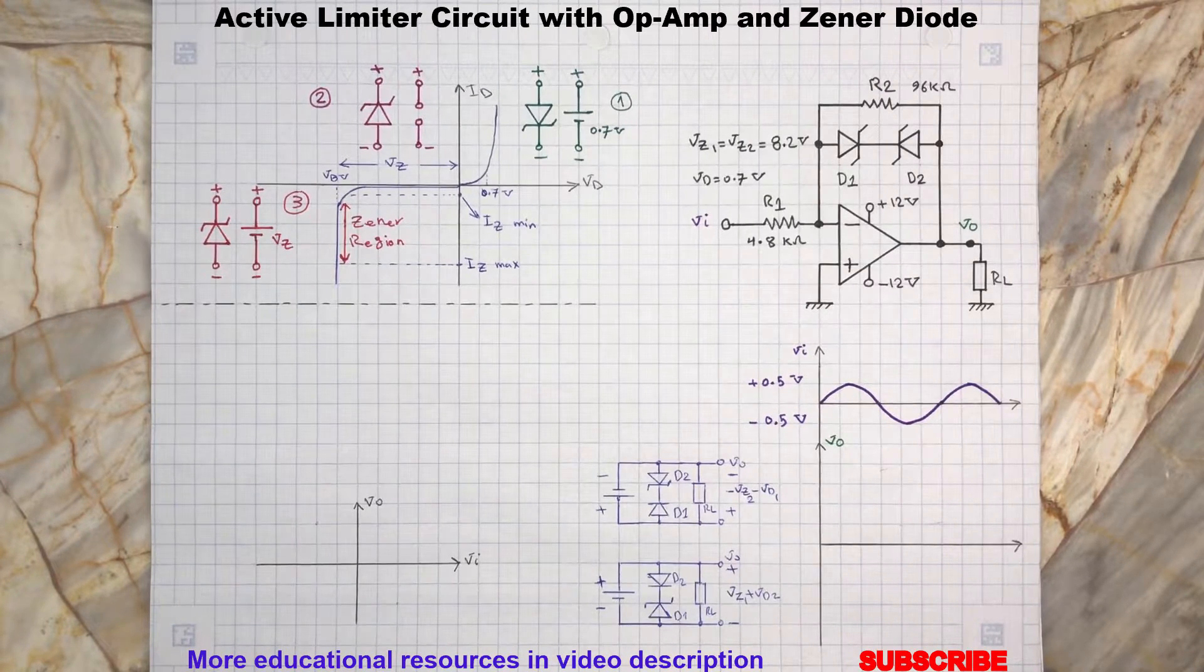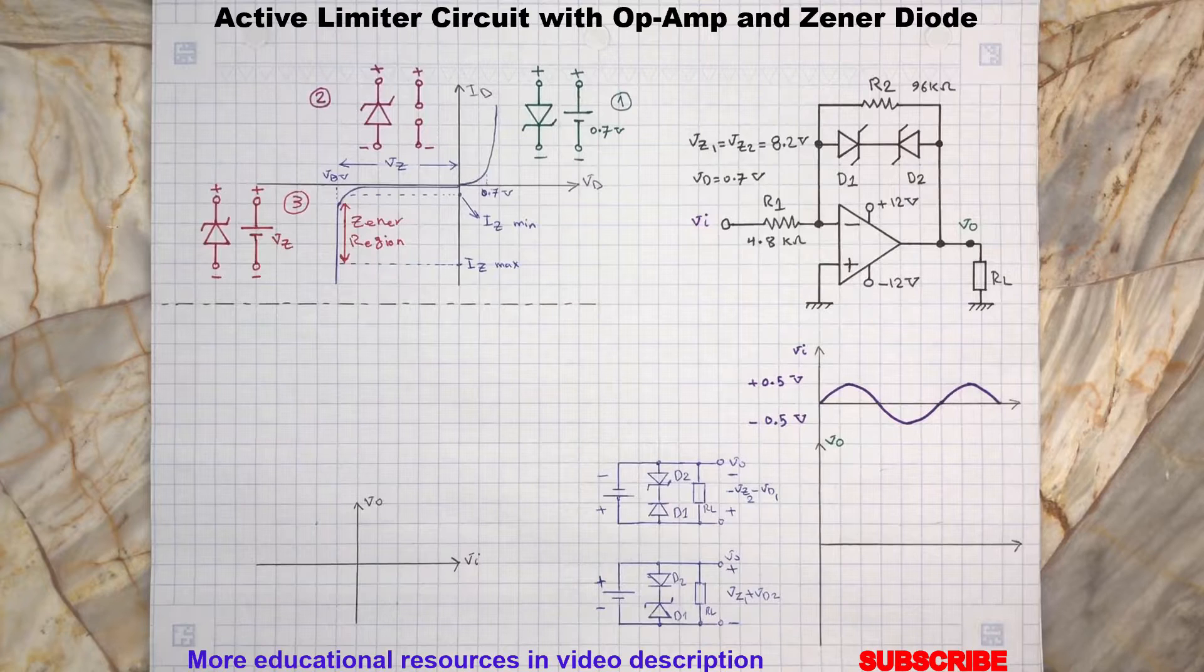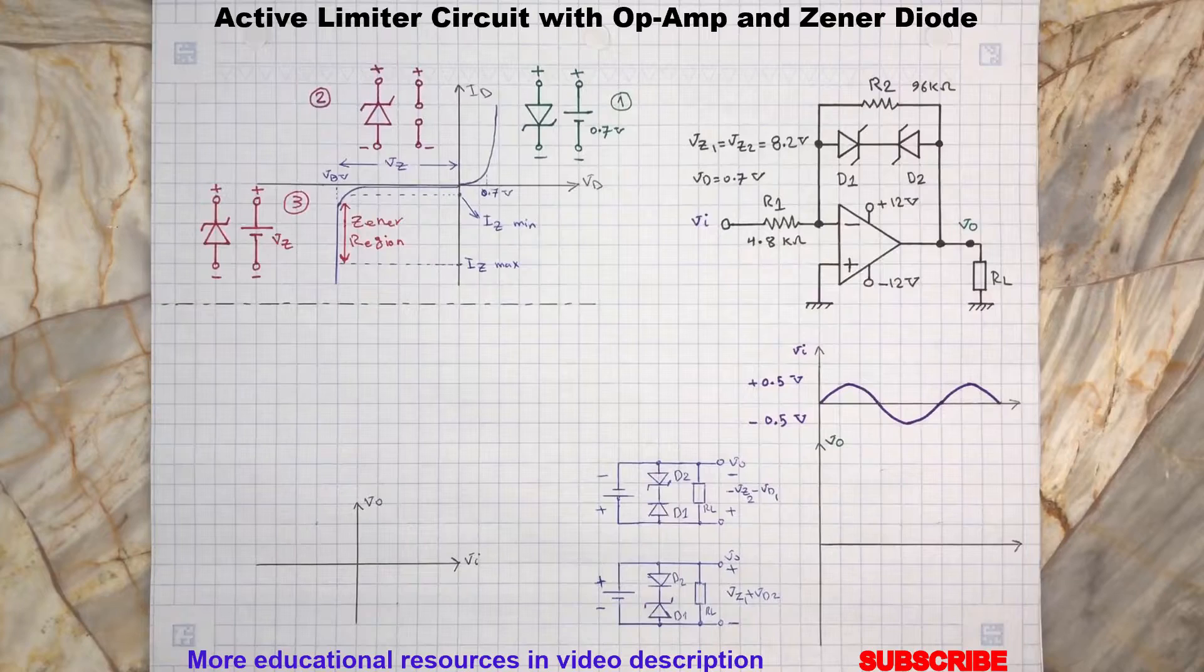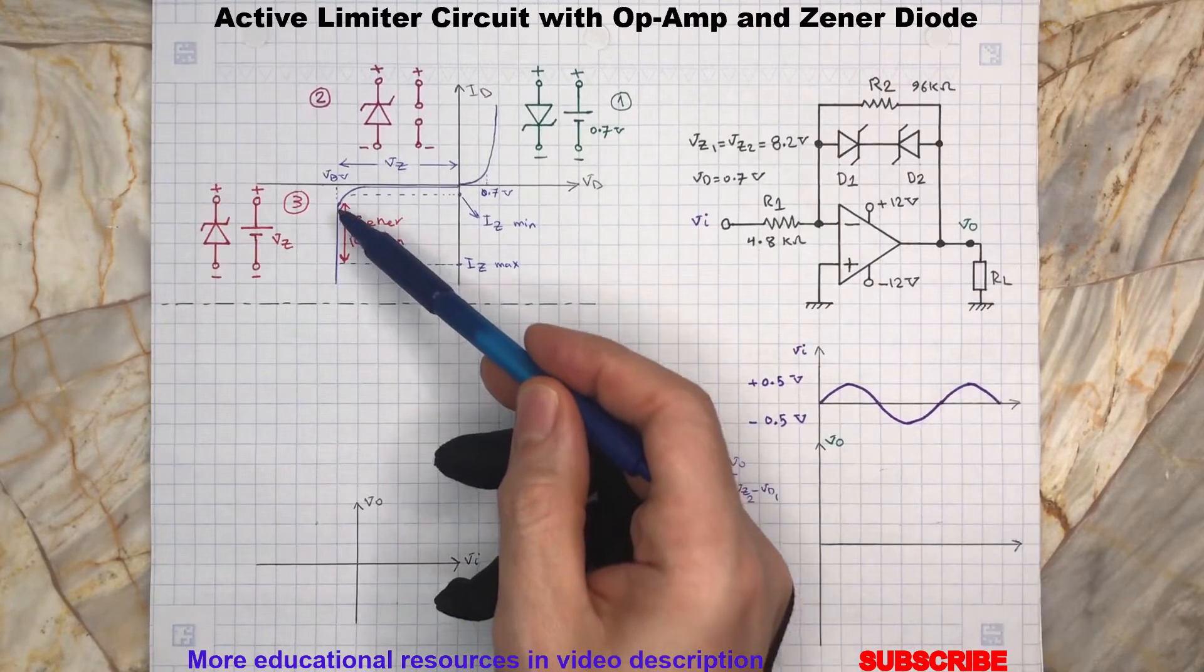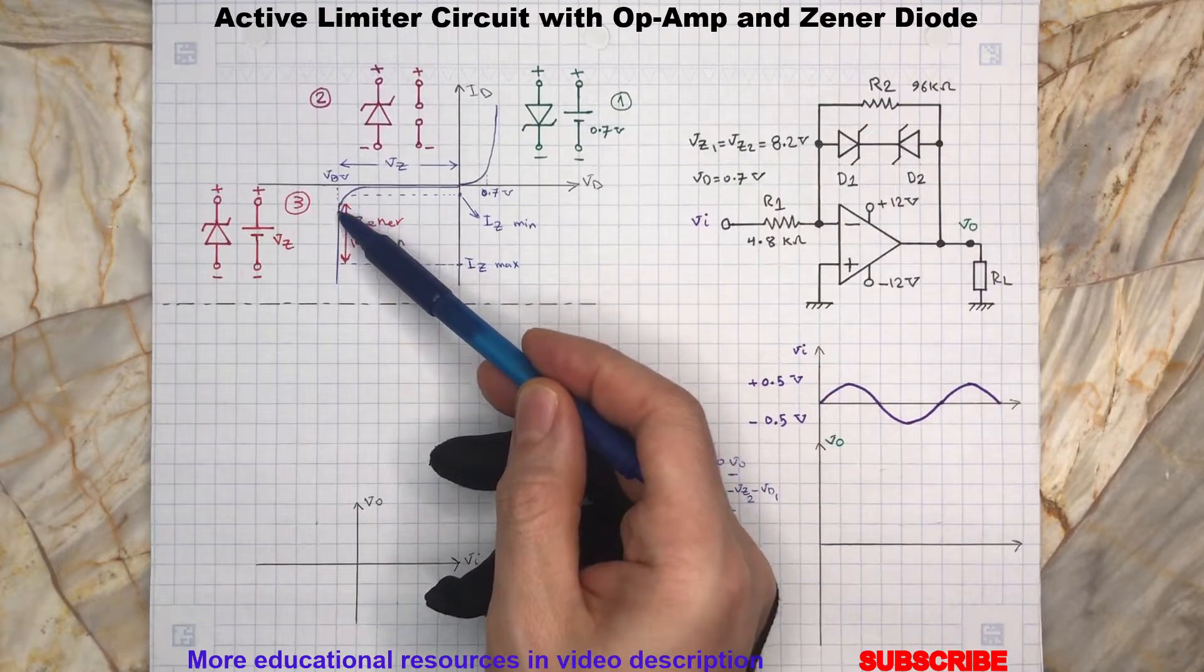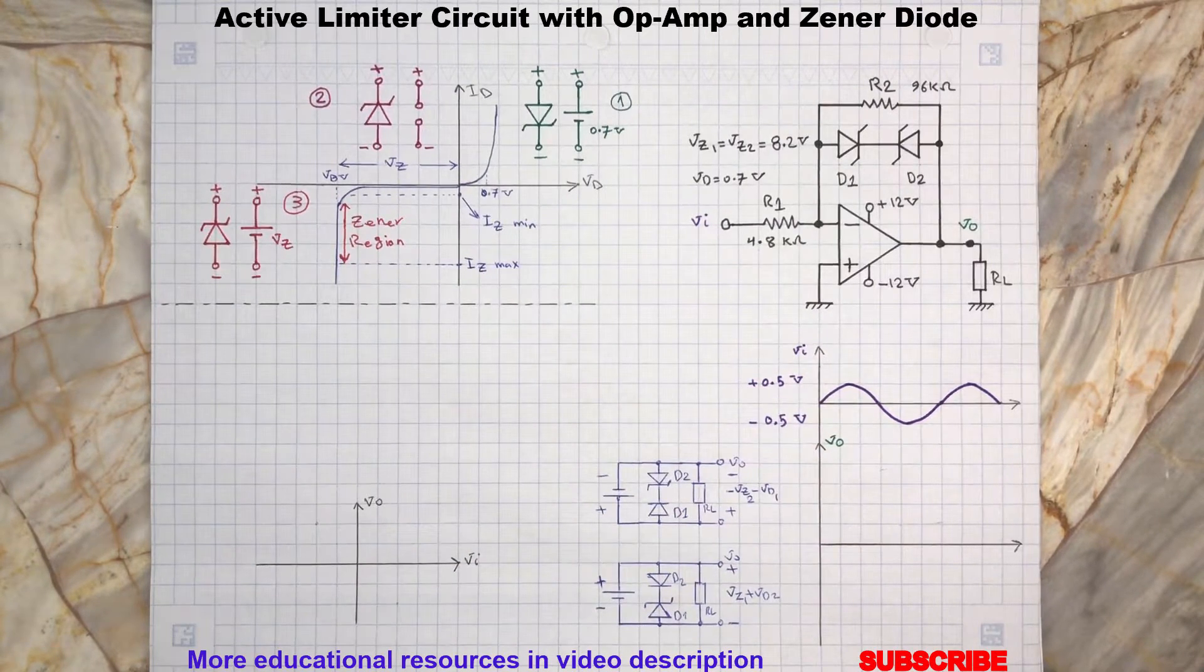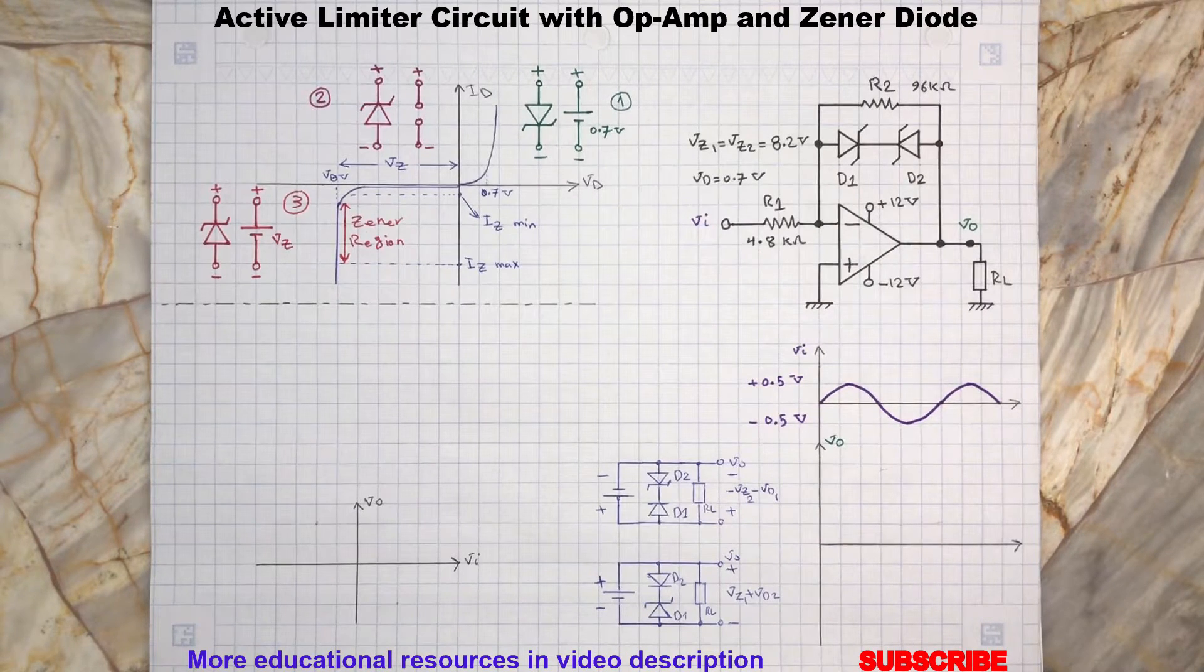When the reverse voltage is applied to the Zener diode, then a voltage remains constant even for a wide range of current flowing through it. This is the region a Zener diode is expected to be in and operates in most electronic circuits.